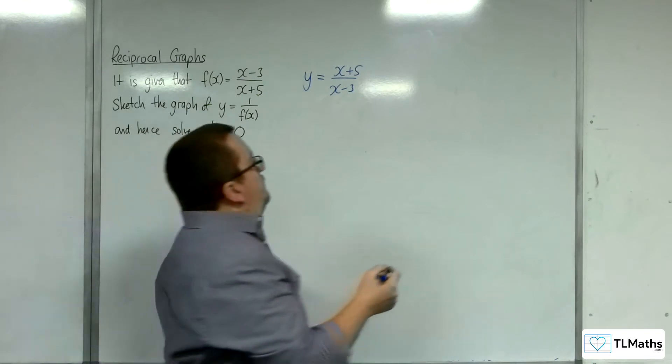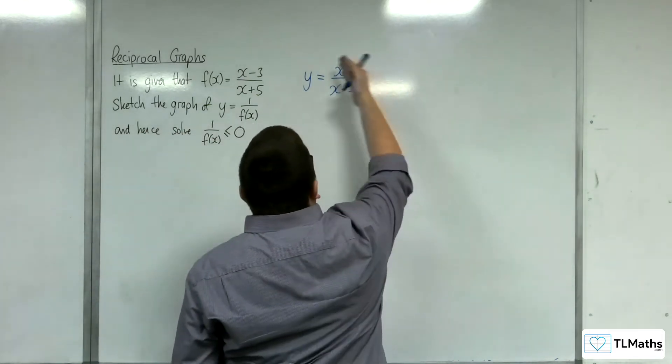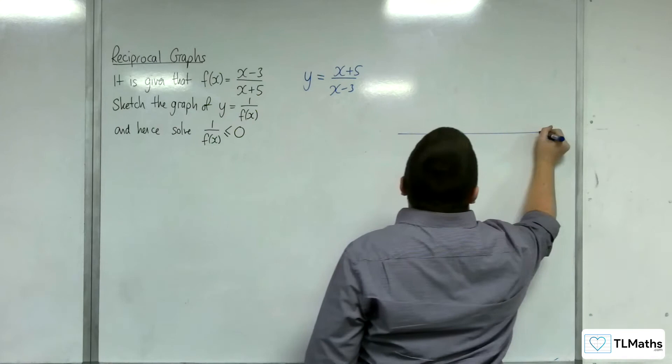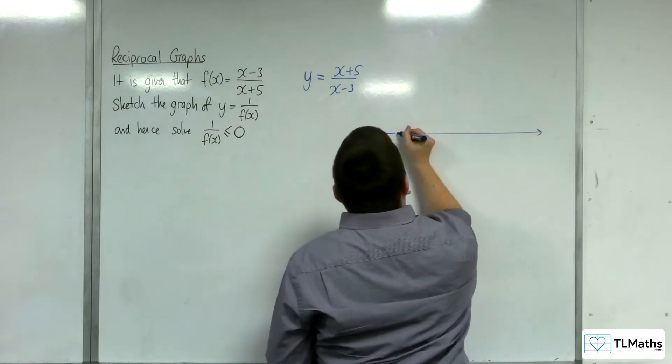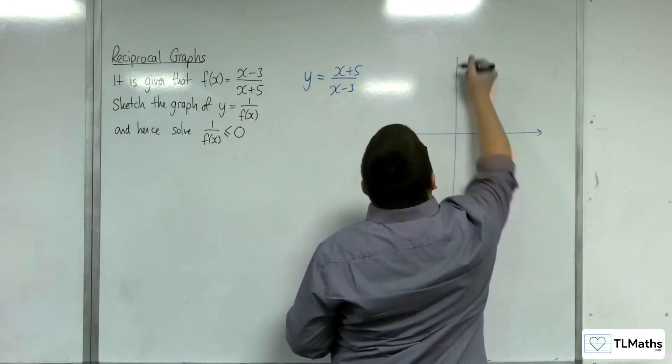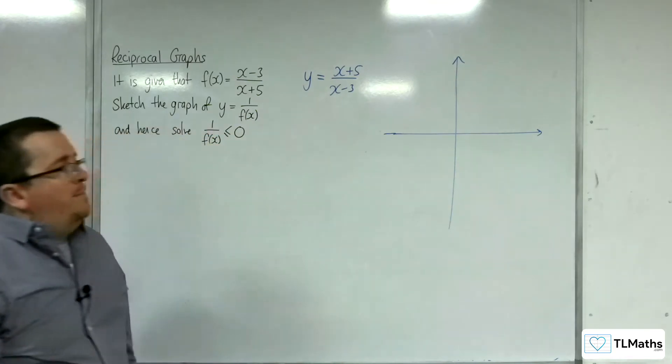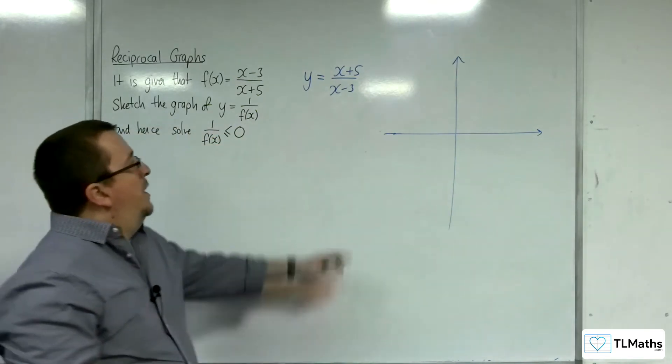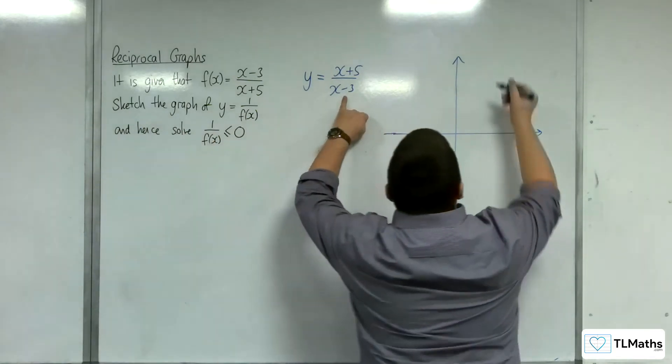So, using our knowledge of how to sketch this type of graph, we can immediately identify it's got a vertical asymptote at x equals 3 because that's when the denominator is 0.